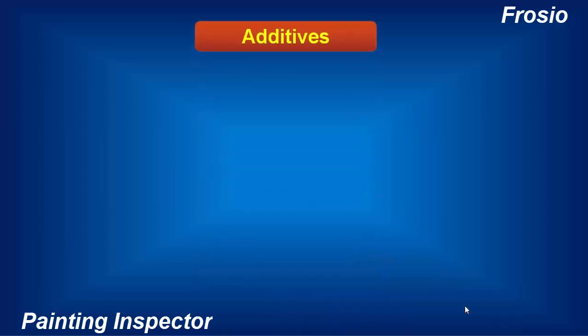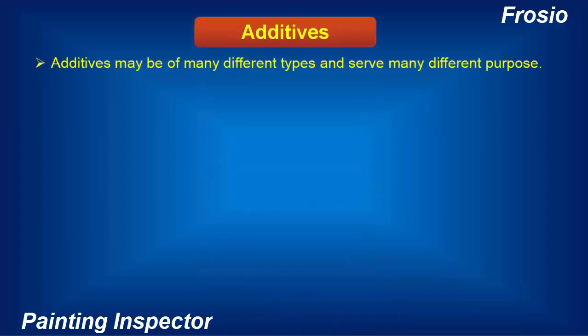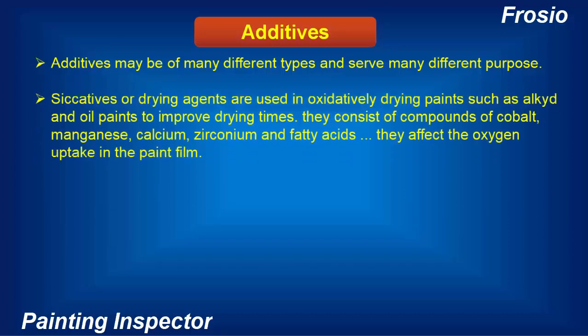Additives may be of many different types and serve many different purposes. Siccatives, or drying agents, are used in oxidatively drying paints such as alkyd and oil paints to improve drying times. They consist of compounds of cobalt, manganese, calcium, zirconium, and fatty acids.